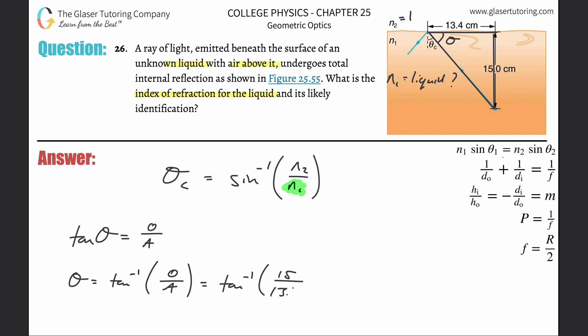You technically do not need to convert these into meters because it's simply a ratio - the units will cancel no matter what. There's 15 divided by 13.4. When it's very clear to me that I don't need to convert, I just don't bother. This theta value is now equal to 48.2 degrees.